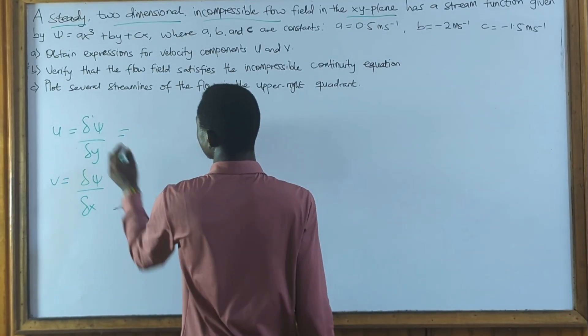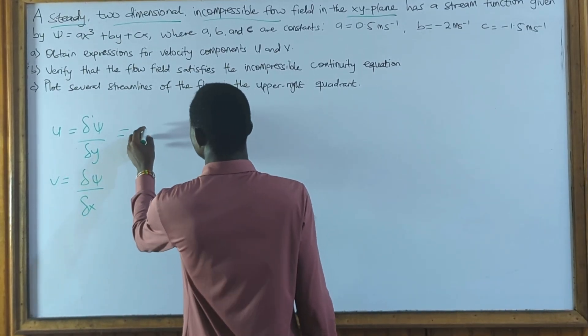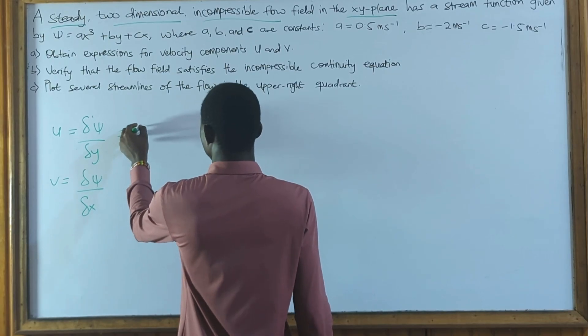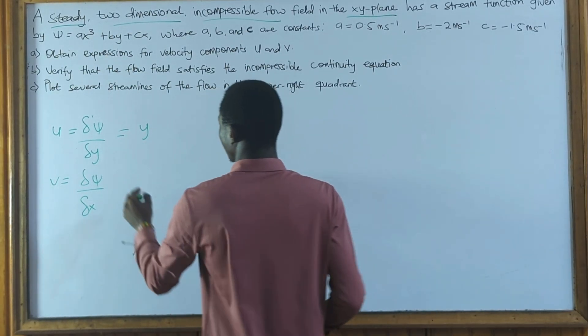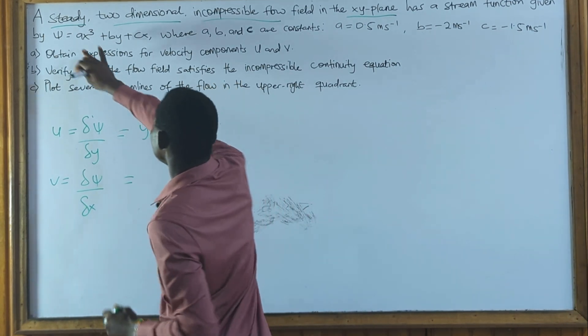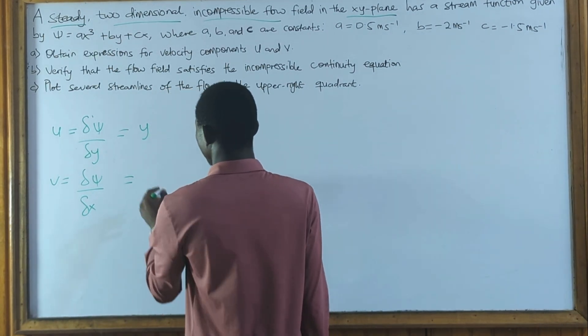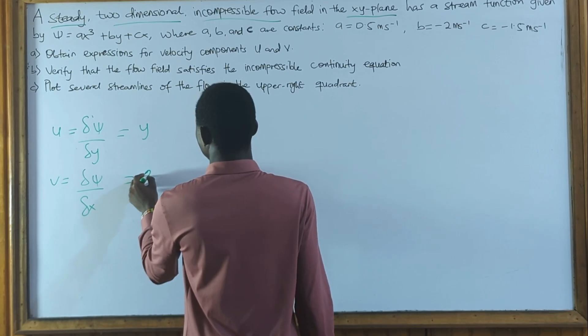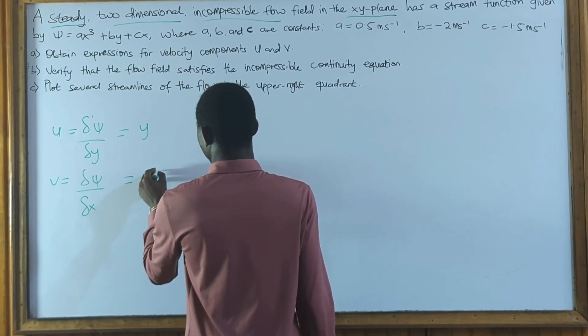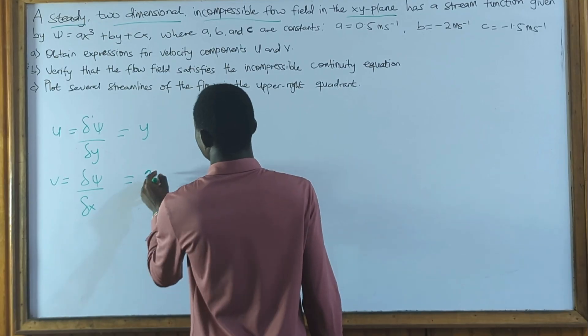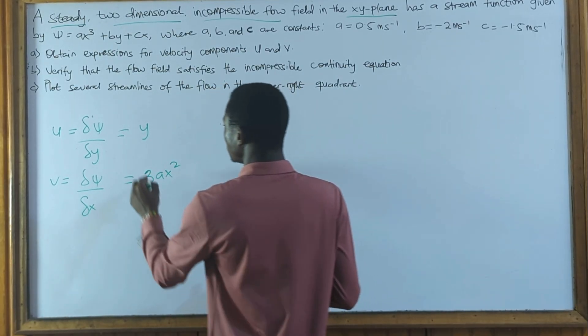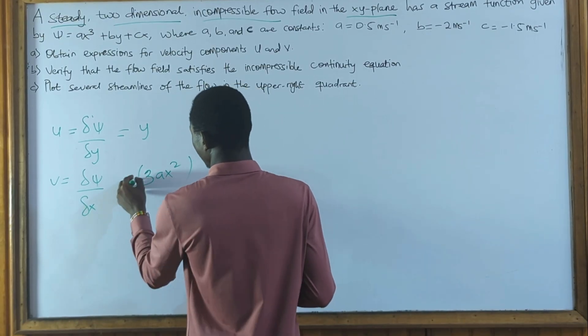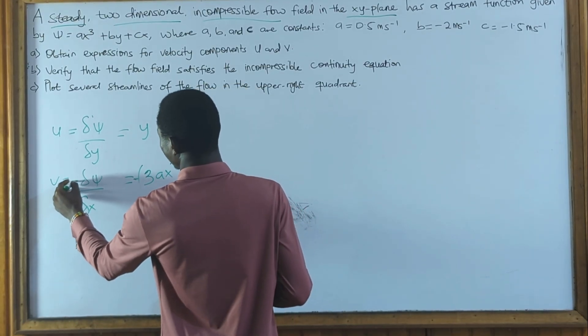So we would have this to be y. If we differentiate this, we will get y. And when we differentiate the x components, we are going to get 3ax². But it would be negative because this equation is also negative.